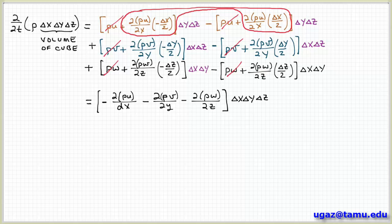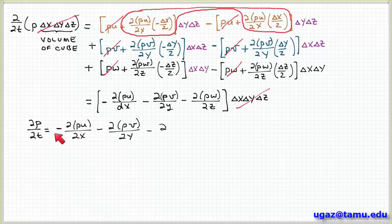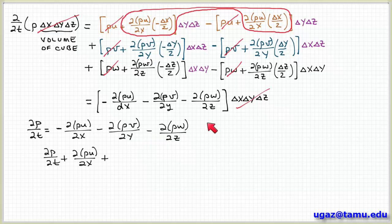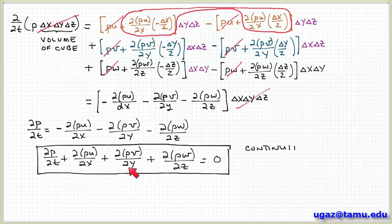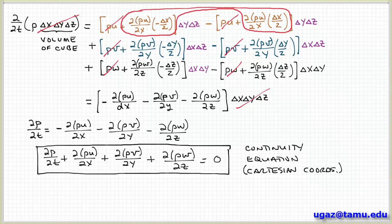When I do that, I notice that delta x delta y delta z becomes a common factor, so it cancels out with the volume on the left-hand side of the equation, which simplifies things considerably. So I have the partial of rho with respect to time equals minus partial of rho u with respect to x, minus partial of rho v with respect to y, minus partial of rho w with respect to z. Collecting terms on one side, all the minuses become plus: partial of rho with respect to t, plus partial of rho u with respect to x, plus partial of rho v with respect to y, plus partial of rho w with respect to z equals zero. This is known as the continuity equation, or conservation of mass, written here in Cartesian coordinates — a partial differential equation expressing the conservation of mass.